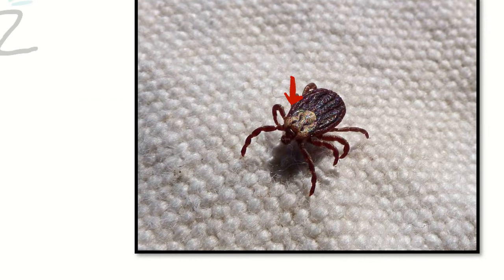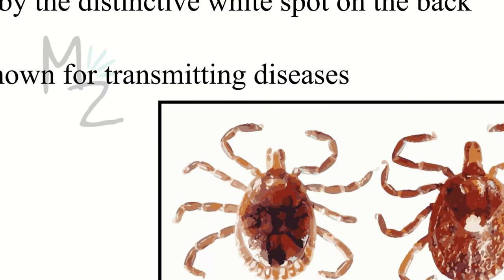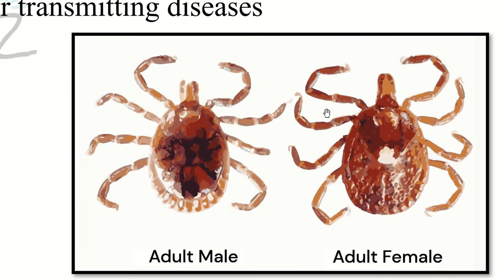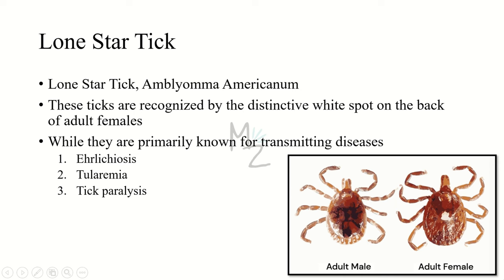Next is the lone star tick, also called Amblyomma americanum. These ticks are recognized by a distinctive white spot on the back of adult females, as you can see in this picture. The female has a white spot on its back and the male has a star-like appearance — that's why they're called lone star ticks. While primarily known for transmitting diseases like ehrlichiosis and tularemia, they are also responsible for tick paralysis.